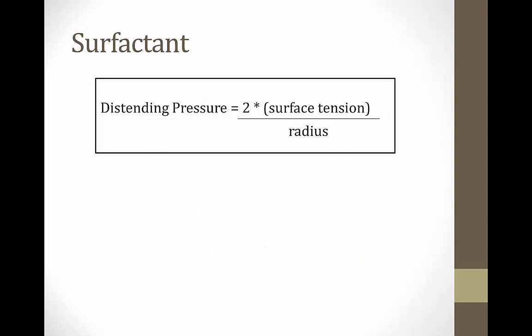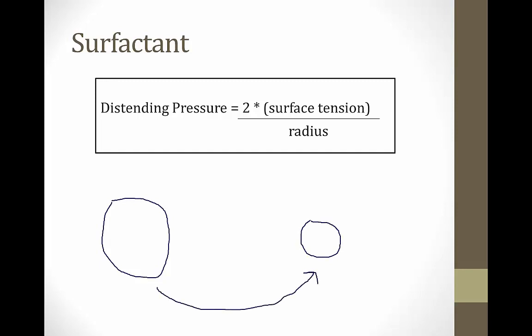Applying this to the alveoli: when you inhale, the alveoli get large, like the large sphere. When you exhale, they get small. As air leaves the lungs, the alveoli enter a state where the pressure required to keep them open is rising — right when air is leaving and pressure is falling. The lungs prevent collapse through the use of surfactant.